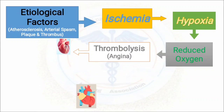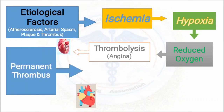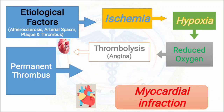If this thrombolysis is not stopped, it will eventually lead to a permanent thrombus — those small clots in any coronary artery or vein will mix together and block an artery completely. Because of that, blood supply will be completely stopped, oxygen supply will be cut off, and all nutrition supply will be cut off.